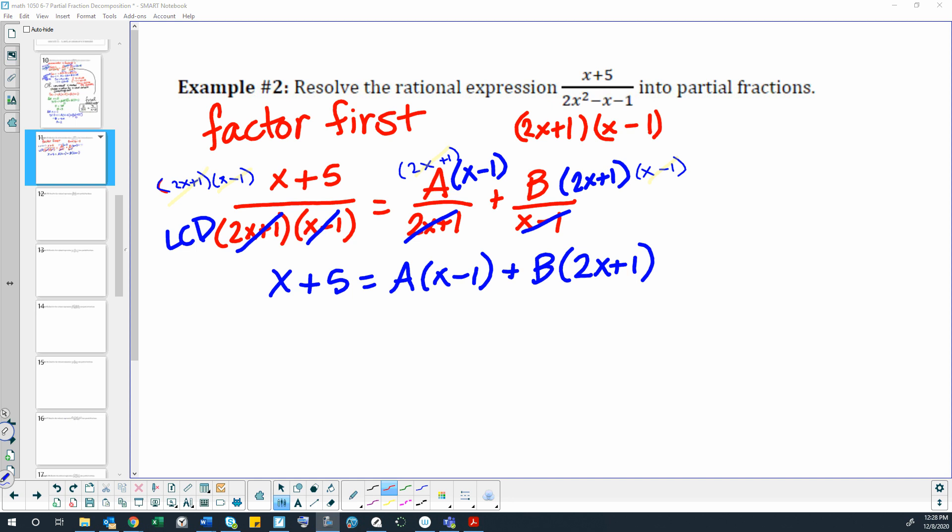So then we write out the whole expression, the whole equation: x plus 5 over 2x plus 1 times x minus 1 equals A over 2x plus 1 plus B over x minus 1, because we are separating that out into the two fractions with the two factors.